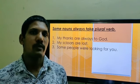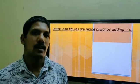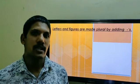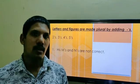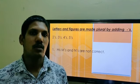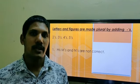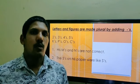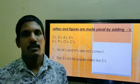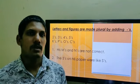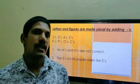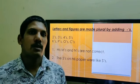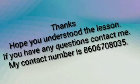What happens when we make singular letters and figures into plural? Well, they just take up an apostrophe and S. Like: twos, threes, fours, and fives; k's, p's, o's, c's. When we use them in sentences: 'His m's and n's are not correct.' 'The lines on his paper were like s's.' That's all for now, thank you.